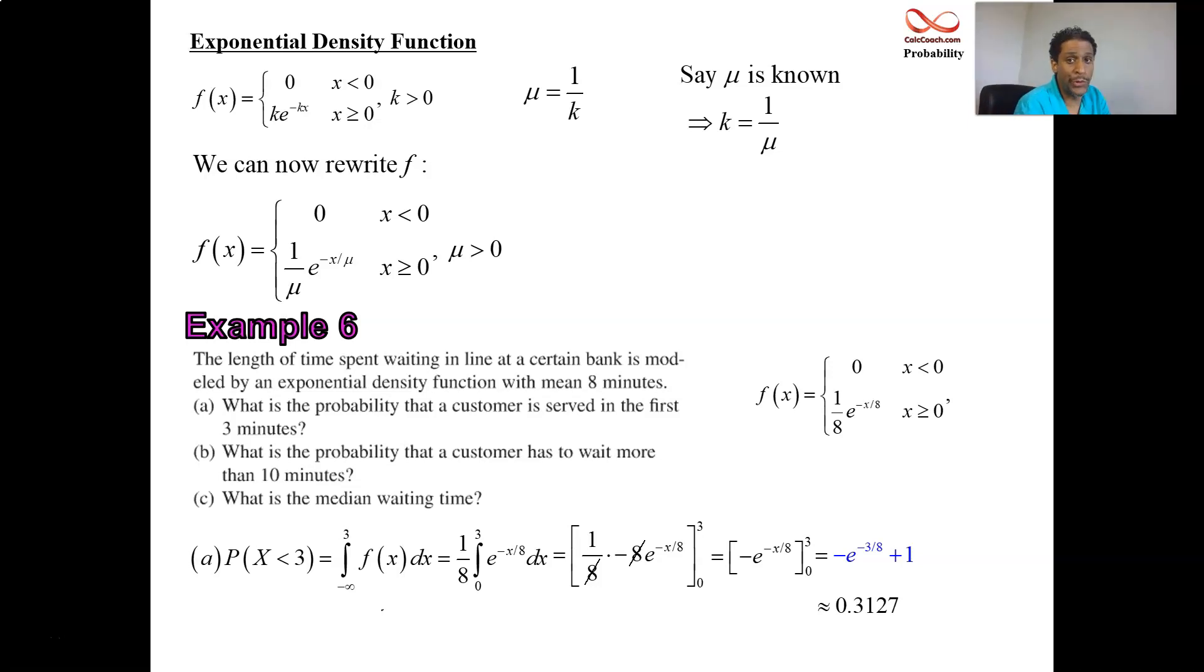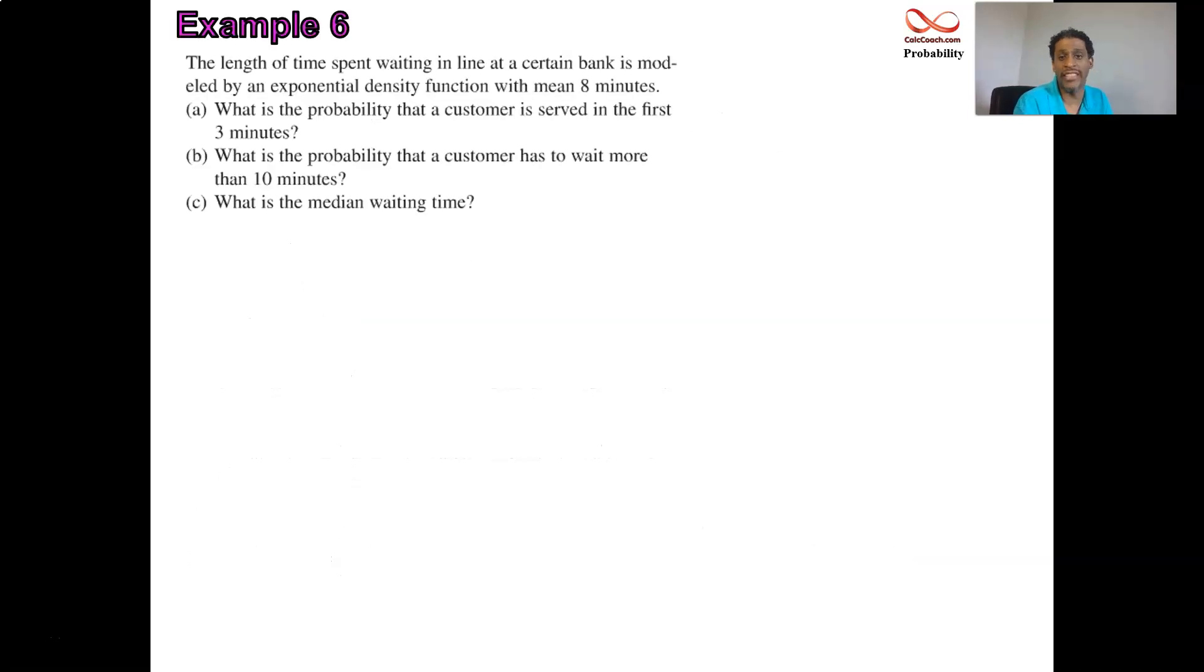All right. On to the next one. Letter B. What's the probability that a customer has to wait more than 10 minutes? I read it wrong. So wait more than 10 minutes. That means your wait time is more than 10. So that means you're going to be from 10 on to infinity. We don't know what the stopping time is. We just know it's more than 10. So we integrate from 10 to infinity.